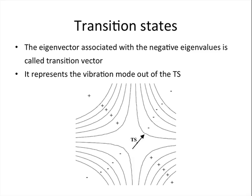Here, we see the transition state in a projection, and we can see the vector points from one valley to the other.